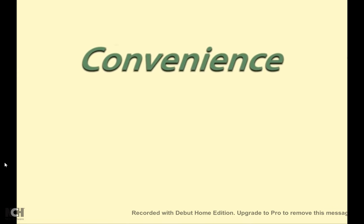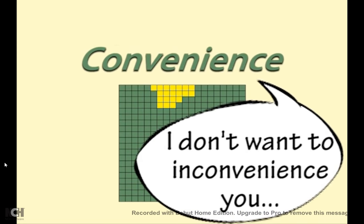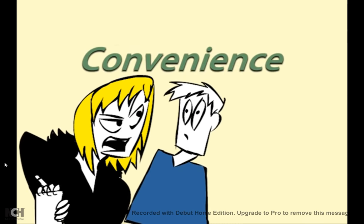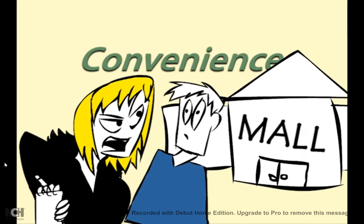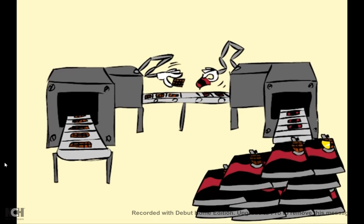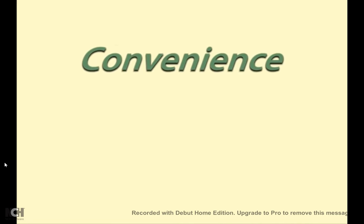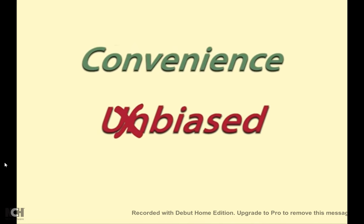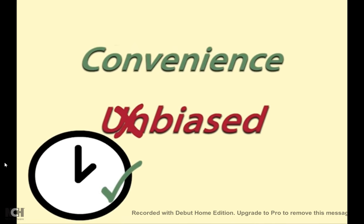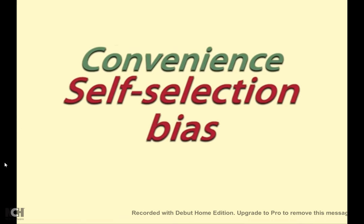Convenient sampling is just that — convenient. You ask people nearby or people who walk past at a shopping mall, or take the next 20 objects off the production line. Convenient samples are often biased in some way, but for a quick and cheap poll it may not really matter. Convenient samples can also have self-selection bias when people choose to participate because they have an interest in the issue in question.